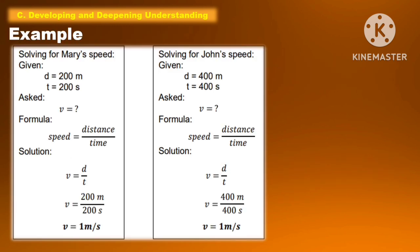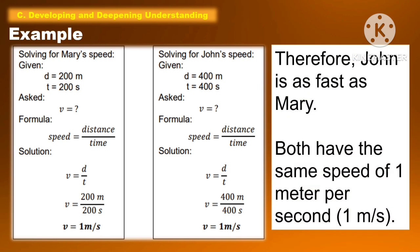Let us solve for Mary's speed. The given is D equal to 200 meters and T equal to 200 seconds. The formula for speed is: speed equals distance divided by time. So V equals D divided by T, which is 200 meters divided by 200 seconds. The answer for Mary's speed is 1 meter per second.